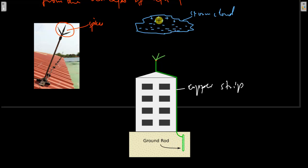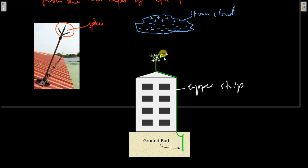These thunder clouds, or storm clouds, have a very, very high charge. Since this is a negatively charged cloud, it will induce positive charges on the lightning conductor. This is possible by the process of electric induction. Remember, the induced charge is always equal to the inducing charge, and since the inducing charge is immensely huge, the induced charge is also going to be very huge. So we have an induced positive charge. Because of the sharp points, there will be a very high electric field intensity at this point.